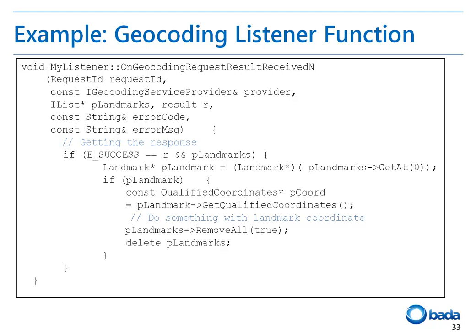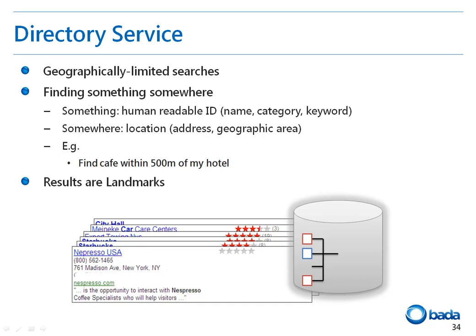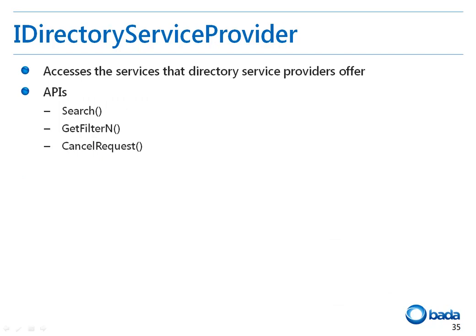The OnReverseGeocodingRequestResultReceivedN API can also be implemented in a similar way — the result you will need to retrieve there will be the address for the requested location. Now let's check the directory services. The directory service is provided through a location service provider and allows applications to perform geographically constrained searches for any data such as places, products, and services. This service is about finding something somewhere — 'something' means some human-readable ID such as a name, category, or keyword, and 'somewhere' can be an address or a geographical area. For example, find a cafe within 500 meters of my hotel. The result of this search will be landmarks.